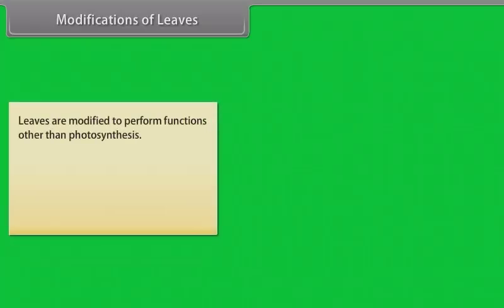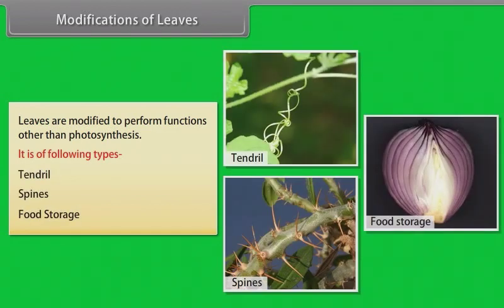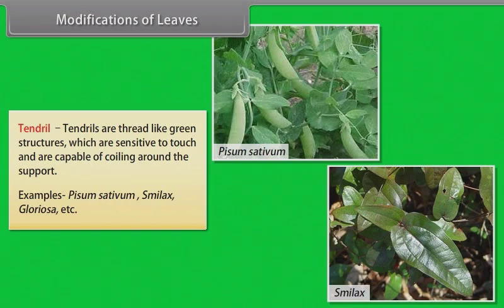Modifications of leaves: Leaves are modified to perform functions other than photosynthesis. It is of following types: tendril, spines, food storage. Tendril: Tendrils are thread-like green structures which are sensitive to touch and are capable of coiling around the support. Examples: Pisum sativum, Smilax, Gloriosa, etc.